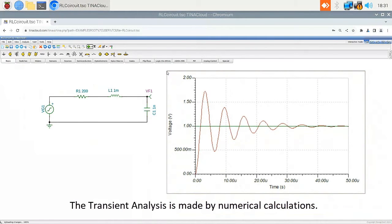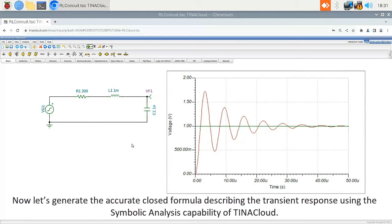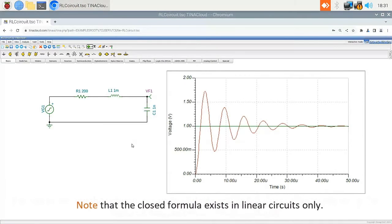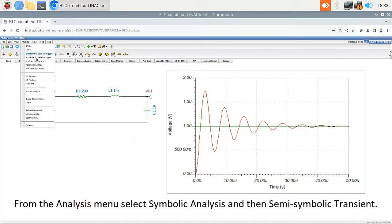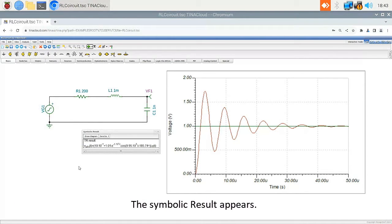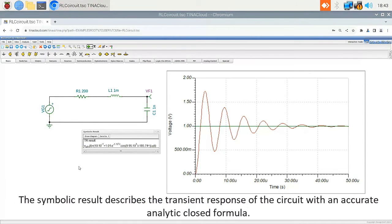The transient analysis is made by numerical calculations. Now let's generate the accurate closed formula describing the transient response using the symbolic analysis capability of TinaCloud. Note that the closed formula exists in linear circuits only. From the Analysis menu, select Symbolic Analysis and then Semi-Symbolic Transient.